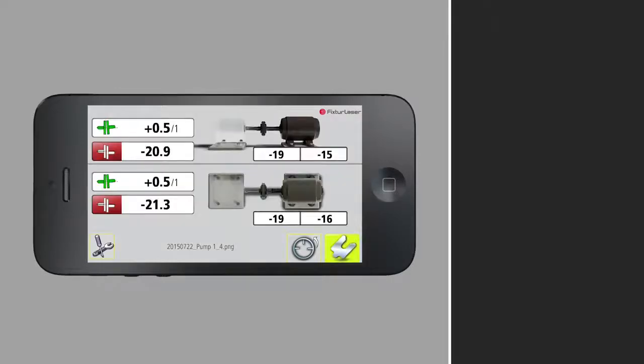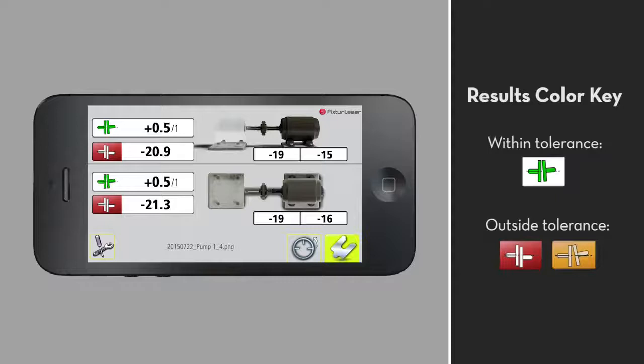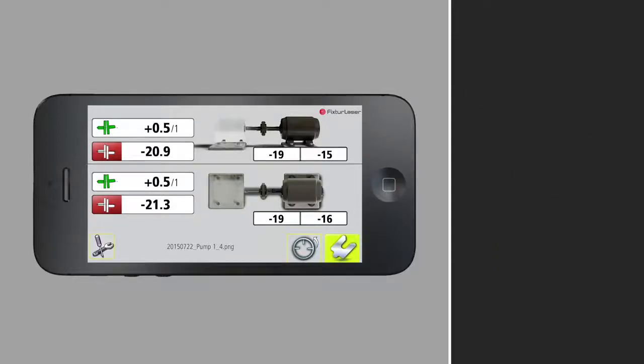The alignment results are now displayed. The icons are color coded and show the relative position of the shafts. The objective is to eliminate misalignment, which will change any yellow or red icons to green. Green indicates that the alignment value is within tolerance. The offset at the feet is also displayed.